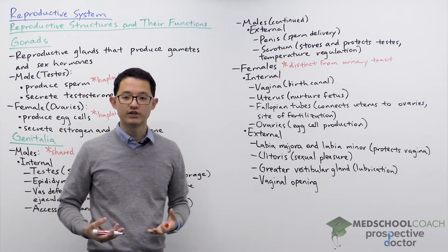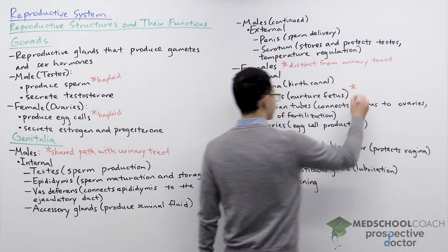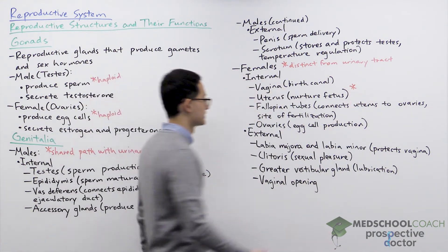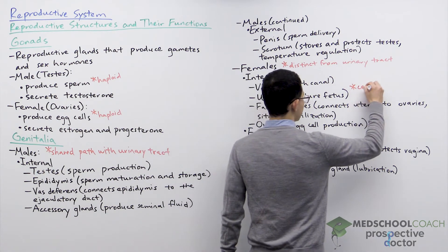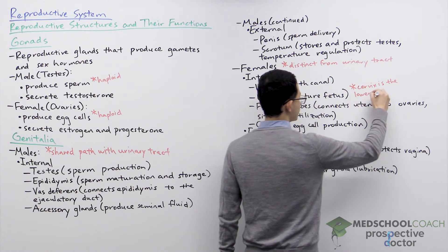Sometimes you also hear about another term between the vagina and the uterus and that is the cervix. The cervix is not a distinct structure from the vagina and the uterus. The cervix is actually the lower part of the uterus.